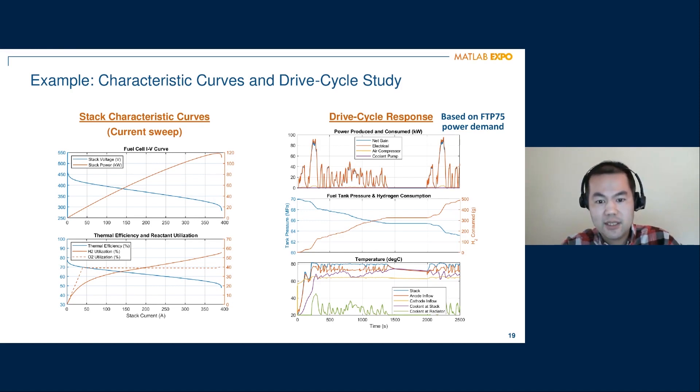The one in the middle shows us the amount of hydrogen consumed, and as a result, the tank pressure decreases. So on the bottom, we're showing the temperature in different parts of the fuel cell system, the anode cathode, as well as the coolant itself around the radiator, how it's being cooled. So this contains the details on the electrical chemistry of the stack and the thermal fluid aspect modeled in the balance of plant.